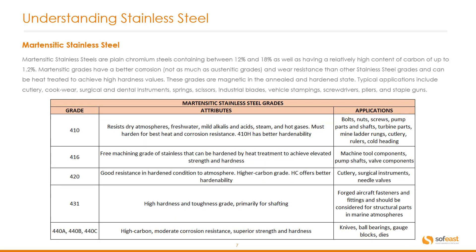Martensitic stainless steels are plain chromium steels containing between 12 and 18% chromium, as well as having a relatively high carbon content of up to 1.2%. Martensitic grades have better wear resistance than other stainless steel grades and can be heat treated to achieve high hardness values. These grades are magnetic in both the annealed and hardened state.